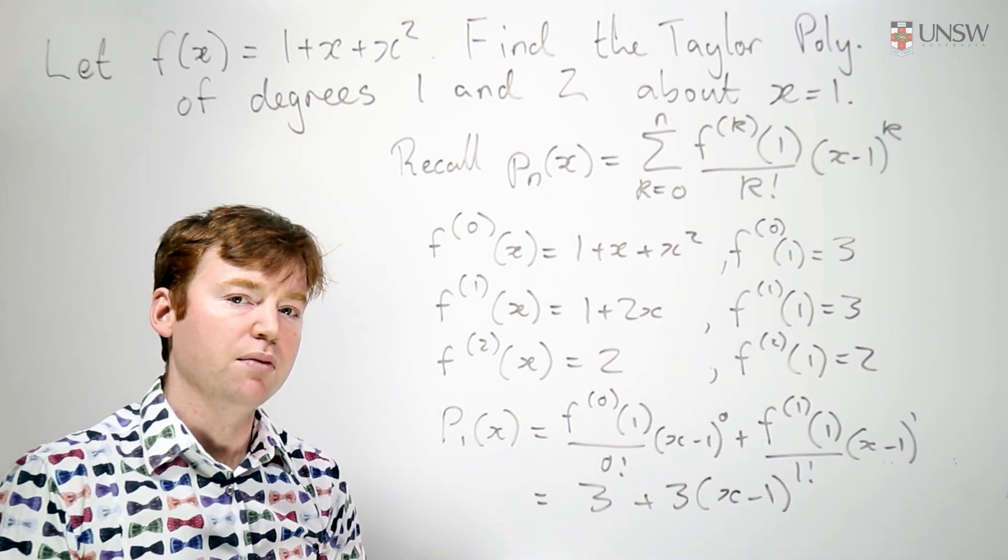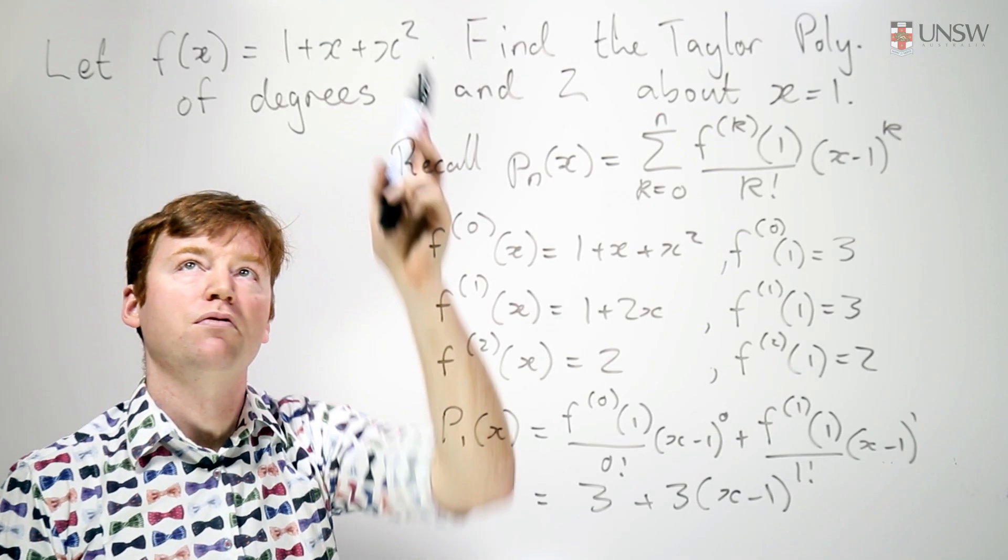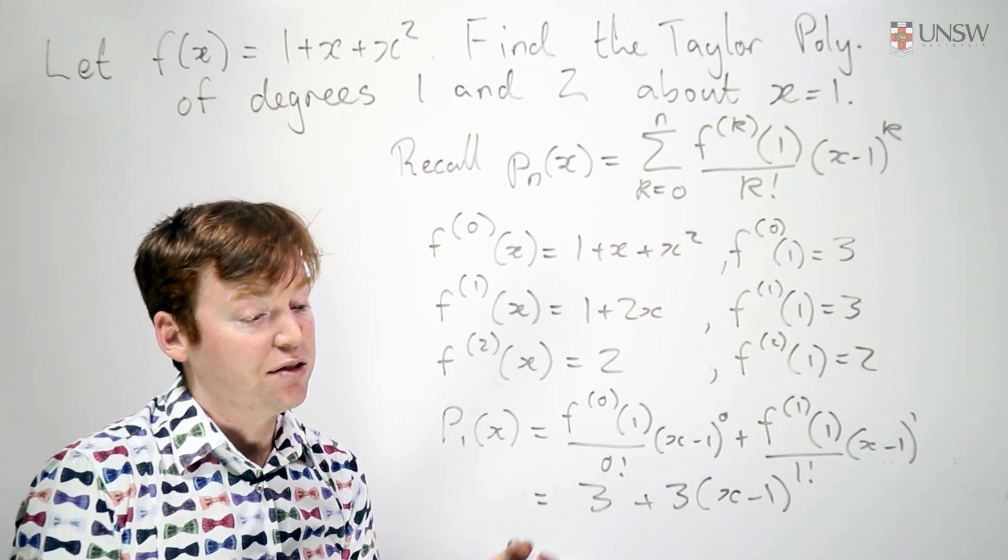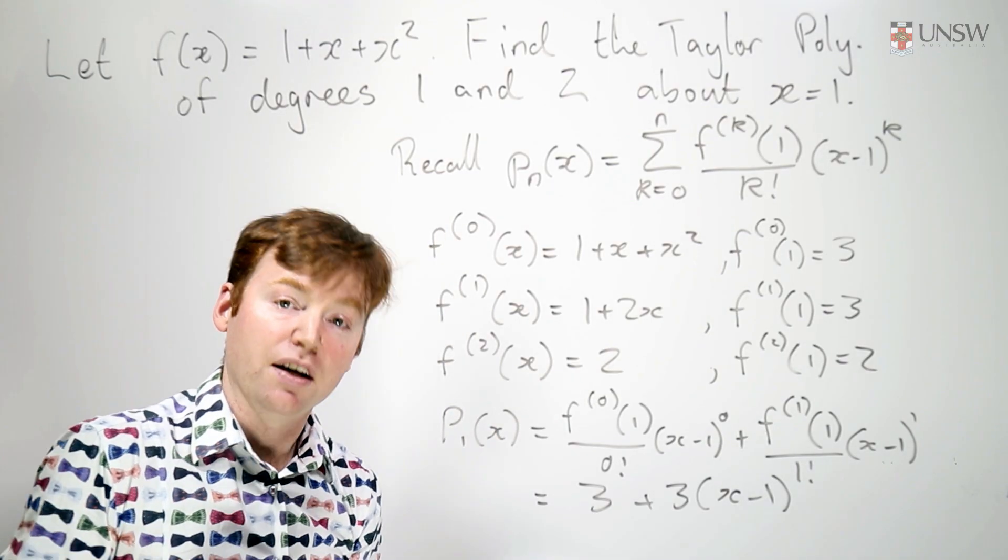Behold, the degree 1 polynomial approximation to this curve at x equals 1, otherwise known as the tangent to the curve at x equals 1.